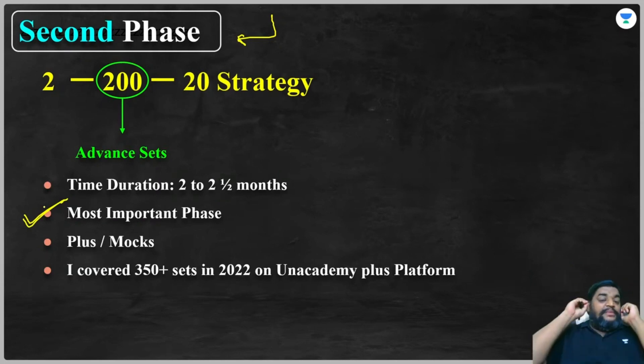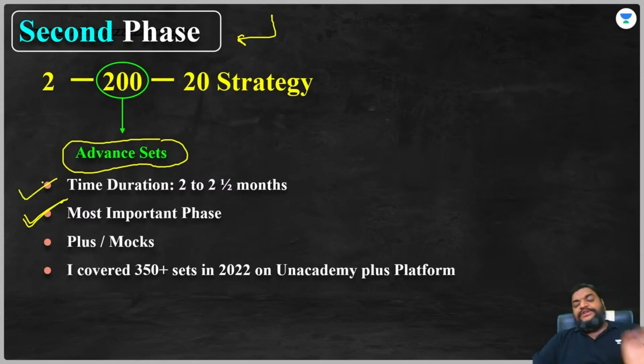After the first phase, the main improvement comes at the examination level. You have to cover 200 advanced sets. You have to cover 200 advanced sets. The ideal time duration for this would be two to two and a half months, roughly 60 to 75 days. Plus subscribers, again don't worry, Plus classes follow. Basics complete, then advanced sets.